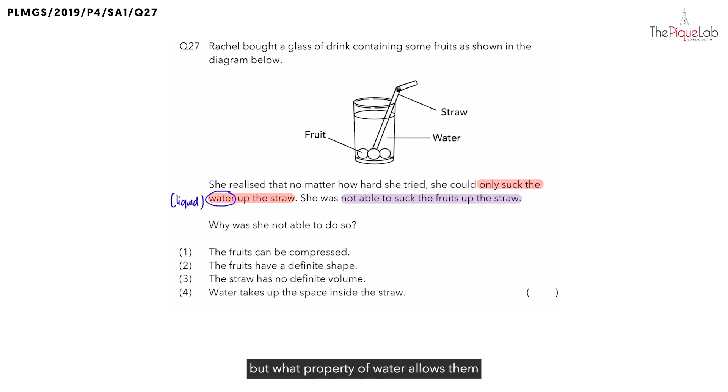But what property of water allows them to be sucked up the straw? Remember, in order for the water to be sucked up the straw, it must be able to change its shape. And since it was able to change its shape, what property is that? It's because liquids, they do not have a definite shape. So, let's write this down. And since they do not have a definite shape, this means that the shape of the water can change. And when the shape of the water can change, this allows the water to flow. And since it was able to flow, it can take the shape of the straw, allowing the water to be sucked up.